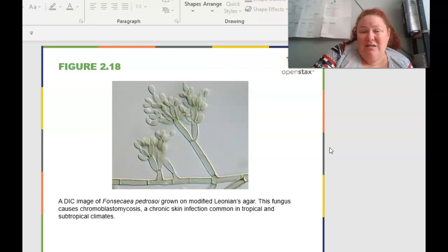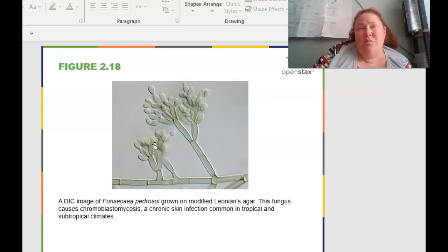So we get to grow some things on agar, which is kind of like a jello substance that feeds the cells. And this is a type of microbe and this fungus causes chromoblastomycosis. And this is a chronic skin infection that's common in tropical and subtropical climates. But you can see that you can detail a lot of the outer images and stuff because we looked at it in a microscope, under a microscope, where if we were doing this with just a naked eye, we would not be able to see these things.